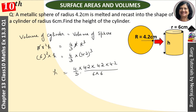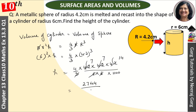Now these are decimals, so we multiply and divide accordingly. After multiplying, we get 2744 divided by 1000, which gives us 2.744 cm.